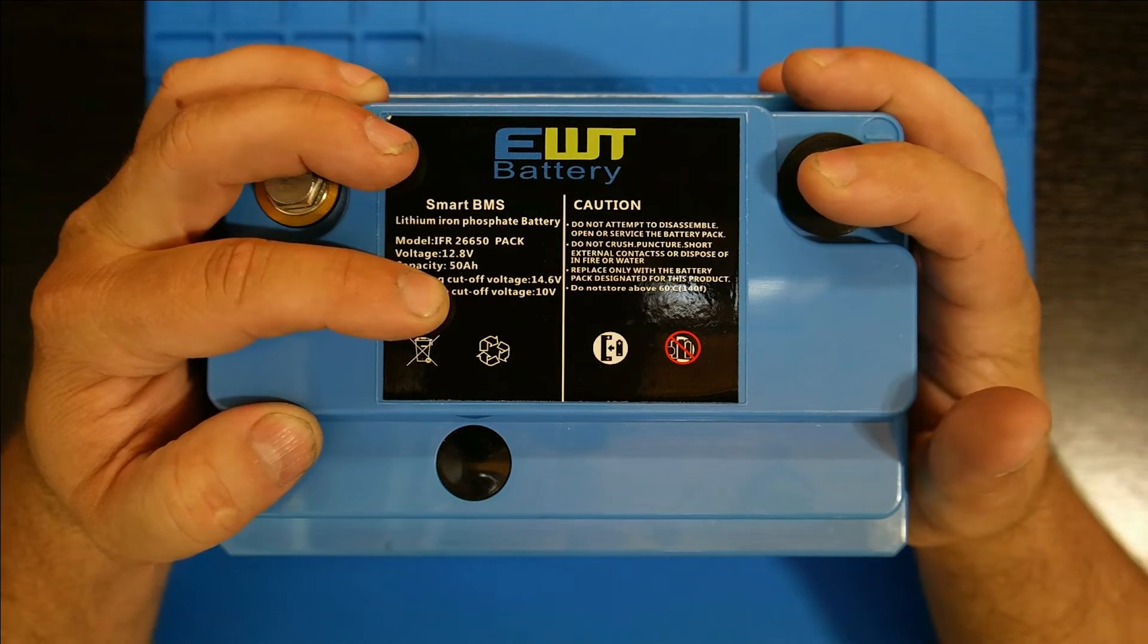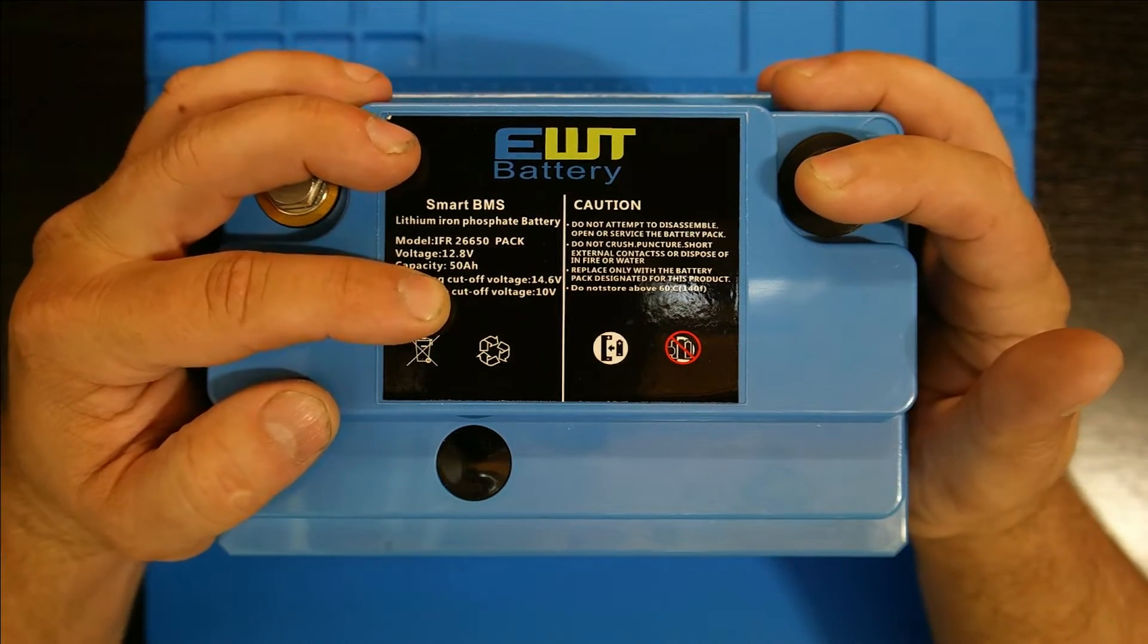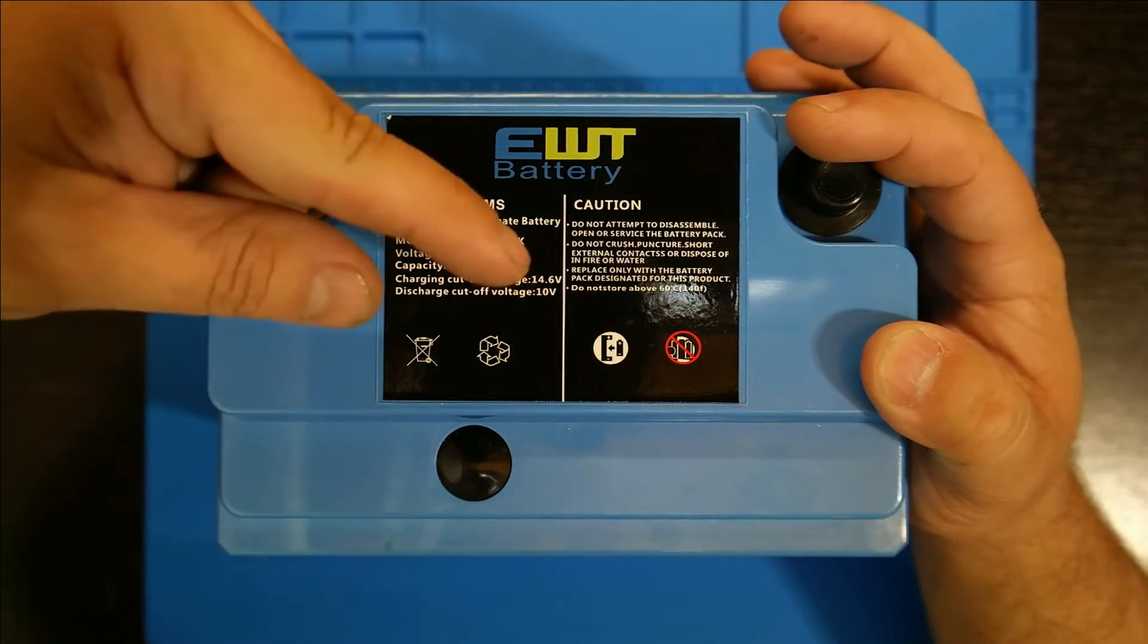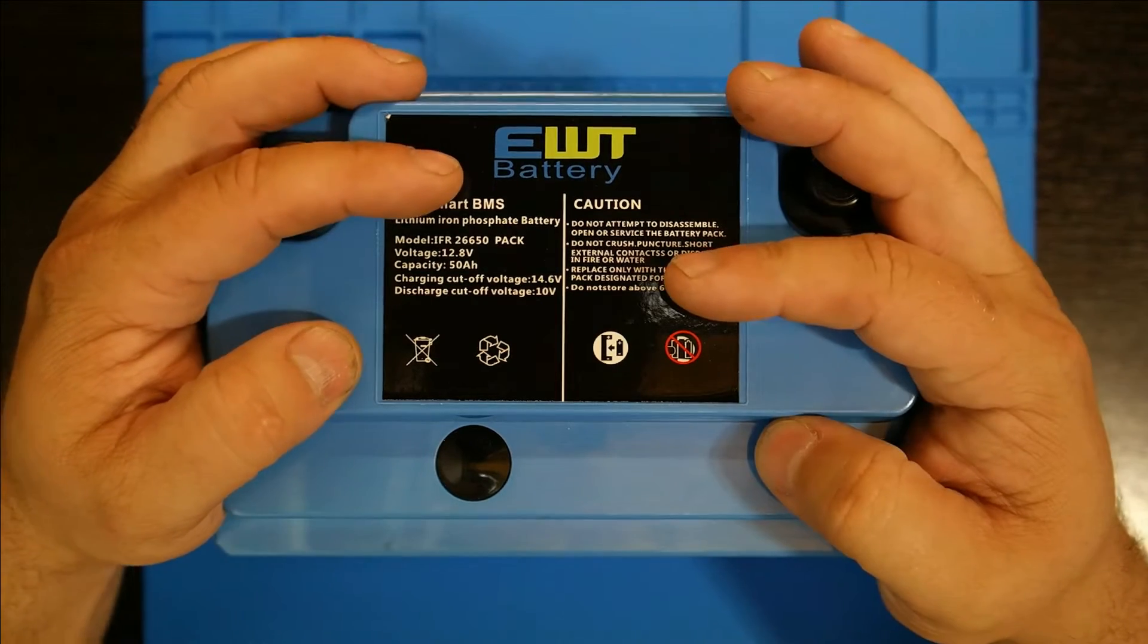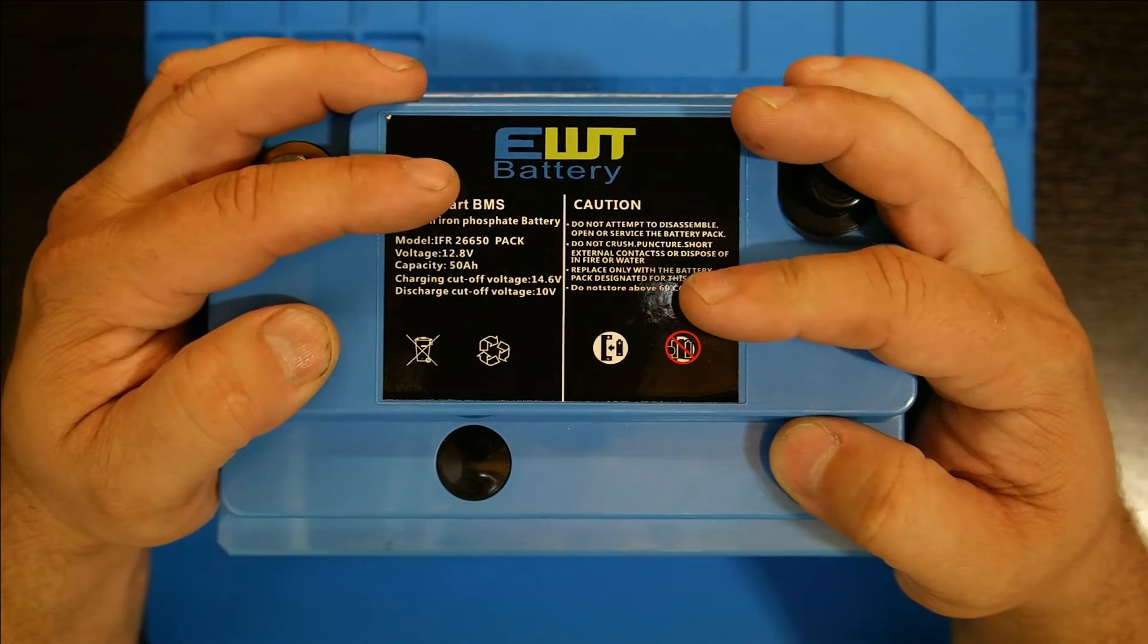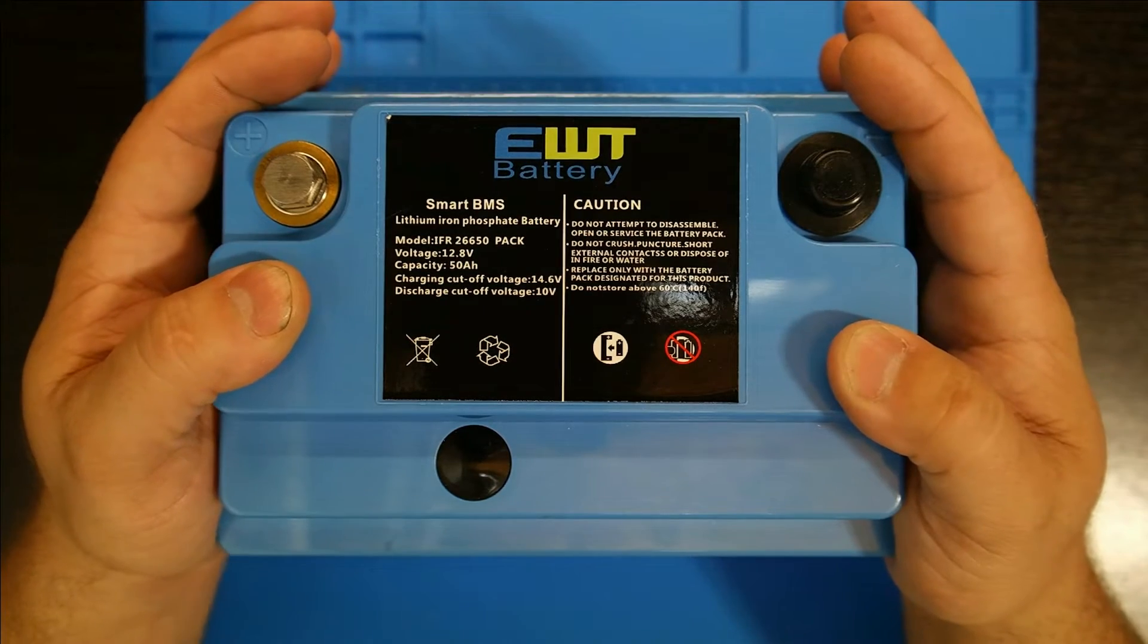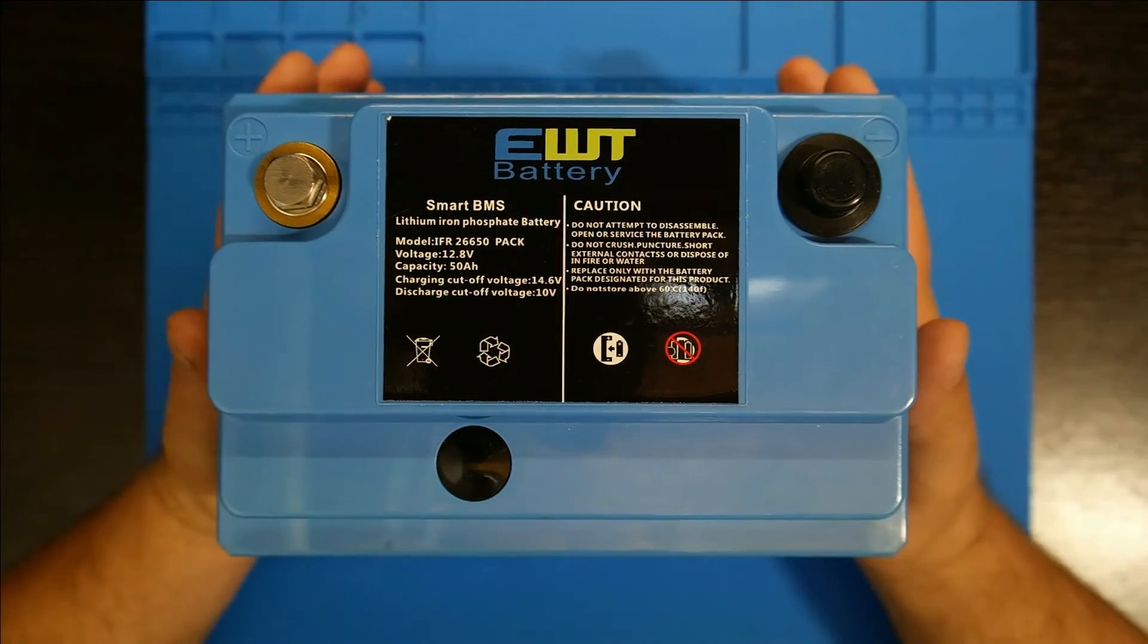It's 50 amp hours, half the rating, but here's the catch: when you have a lead acid battery you usually don't want to discharge it more than 50%, which in this case would be 50 amp hours on the 100 amp hour battery. With lithium iron phosphate you can pretty much use the whole capacity without damaging it. That's why I got a 50 amp hour battery instead.